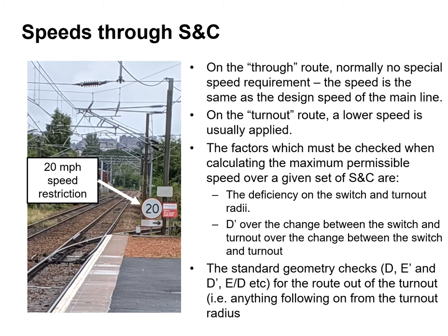On the through route there isn't normally a speed requirement — the speed is the same as the design speed of the main line. On the turnout route, a lower speed is usually required. The factors which must be checked when calculating the maximum permissible speed over a given set of S&C are the cant deficiency on the switch and turnout radii, and D' over the change between the switch and the turnout. The standard geometry checks D, E', and E over D etc. apply for the route out of the turnout. A 20 miles per hour speed restriction can be seen at one of the switch and crossing units at Slateford station.